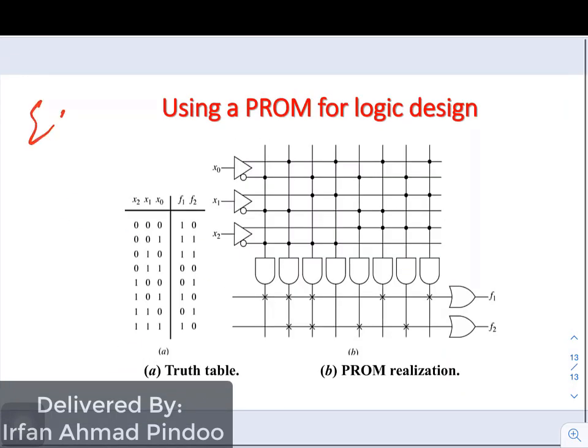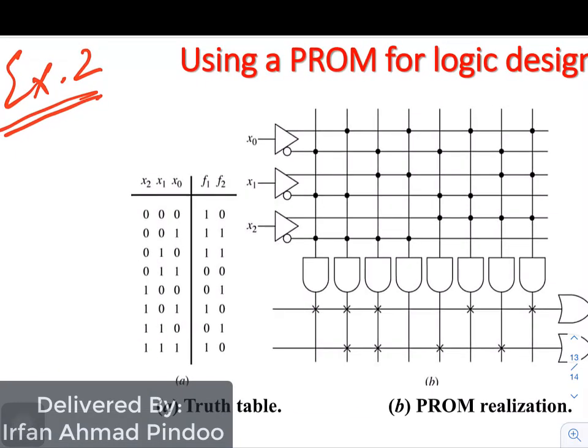There is one more example. This is example number 2. In this example we will learn suppose there is some particular function given to us, how can we realize that function using PROM logic. Now you can see here there is a truth table given to us and this is regarding three variables and two functions have to be implemented, f1 and f2.